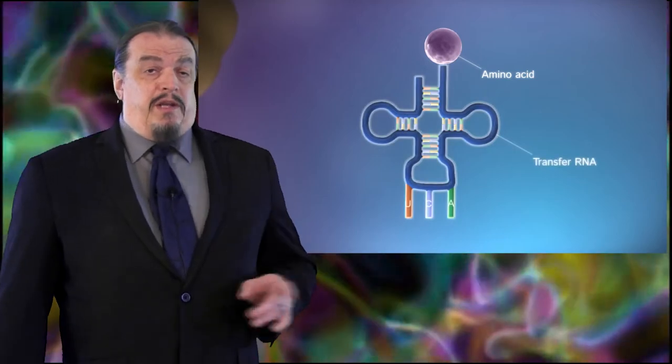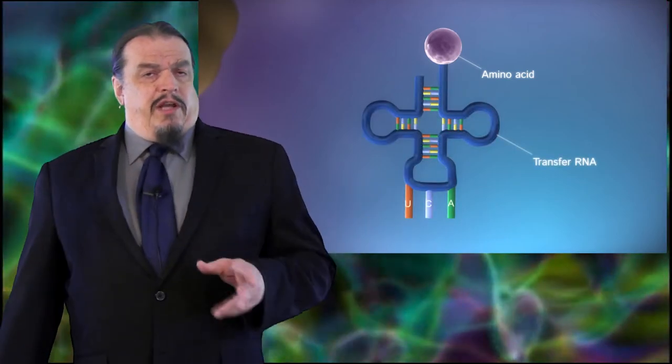In this case, for example, the transfer RNA codon is uracil, cytosine, and adenine. This means that this one will only attach to the messenger RNA where the next available codon is adenine, guanine, and uracil, in that order.